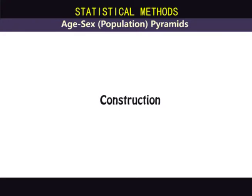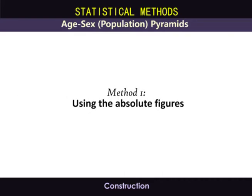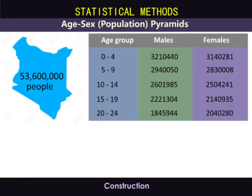Let's look at the construction of age-sex pyramids. We can construct population pyramids either using the absolute figures for each gender in each age group, or using the numbers of each gender in each age group as a percentage of the total population. Let's start with Method 1, that of absolute figures. Consider a country like Kenya with a total population of 53,600,000 people, and let us use the first five age groups to demonstrate this.